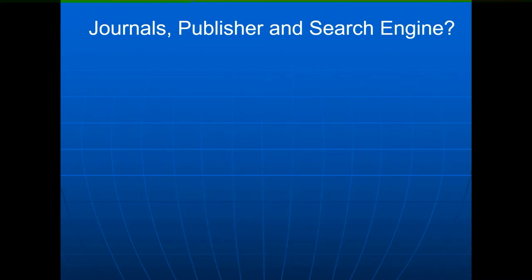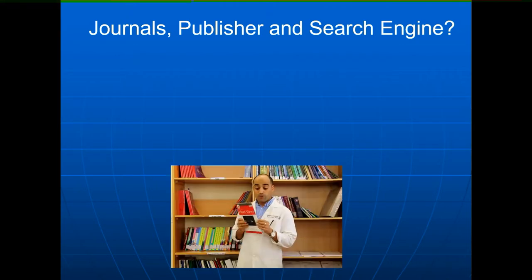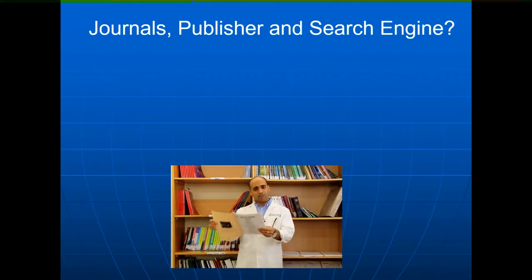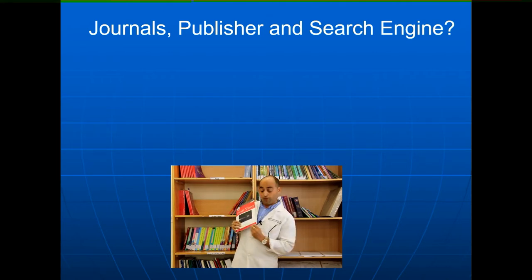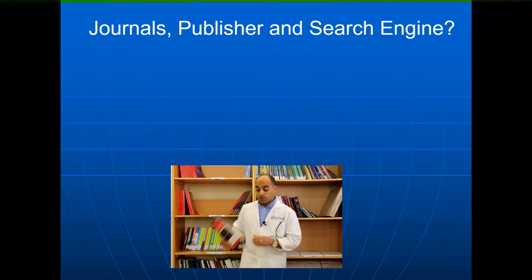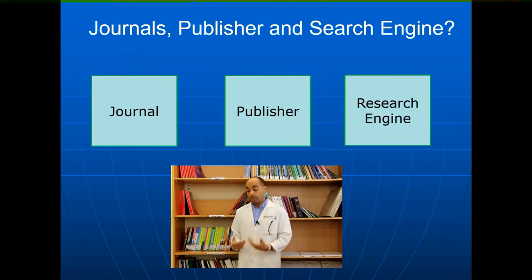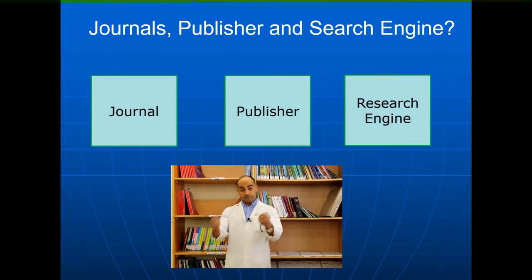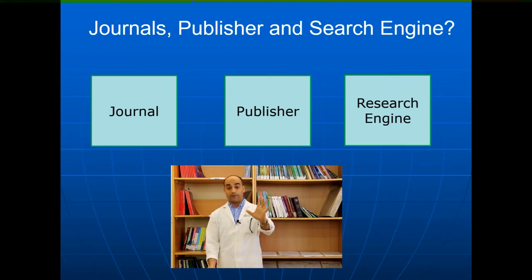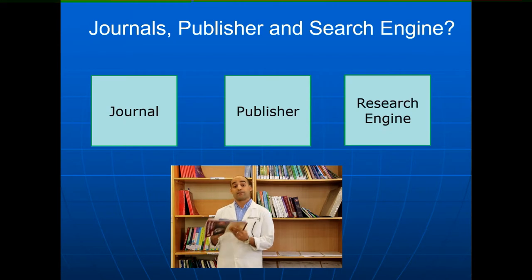Each journal has to find a publisher. The journal has its experts, but those experts can't publish on their own, so they have to find a publisher — such as Wolters Kluwer. The publisher consists of people who are expert in publishing, preparing, printing, and distributing copies.